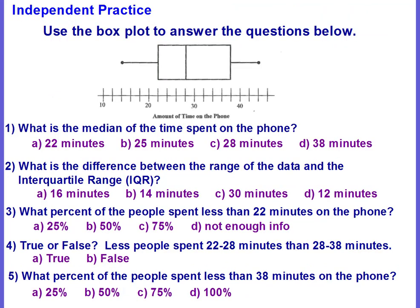Now it's your turn to try. Here's your independent practice — use the box plot to answer the questions. Question one: What is the median of the time spent on the phone? Question two: What is the difference between the range and the IQR? Question three: What percent of the people spent less than 22 minutes on the phone? Question four — true or false: less people spent 22 to 28 minutes than 28 to 38 minutes. Question five: What percent of the people spent less than 38 minutes on the phone?